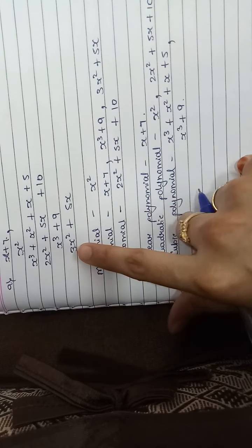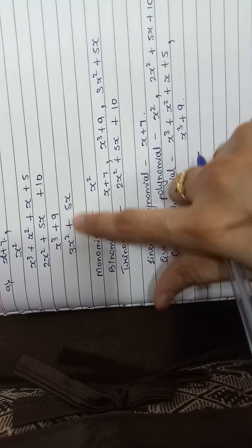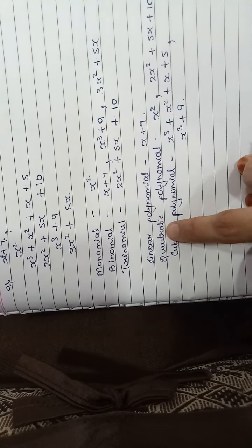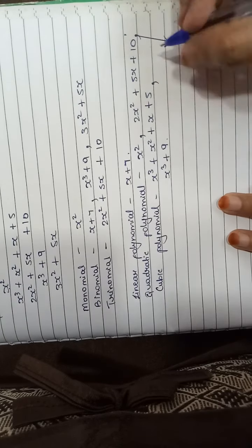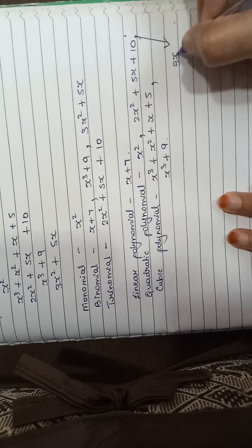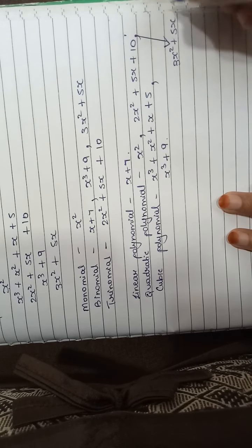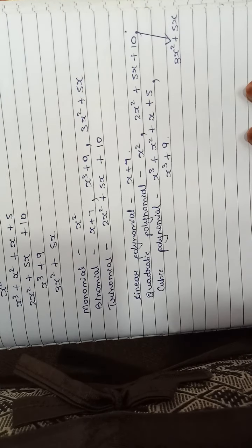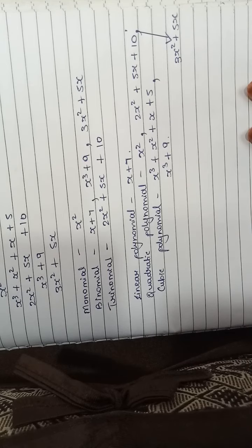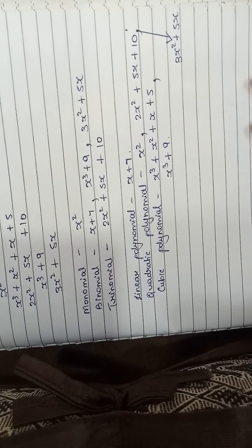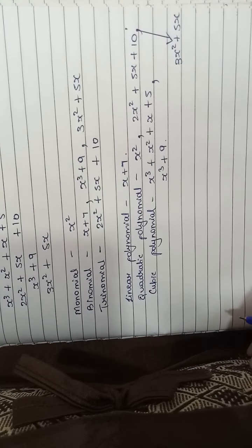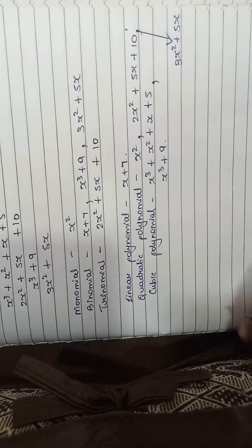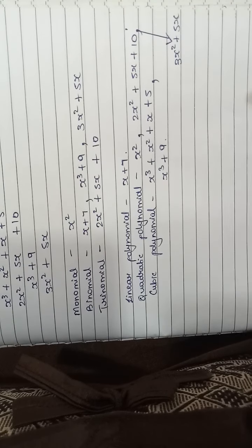And the last example: 3x square plus 5x — the highest degree is 2, so it falls under quadratic polynomial. I hope I have made it very clear what are the polynomials and what are the types of polynomials. I hope you enjoyed this lecture. Thank you very much for your time.